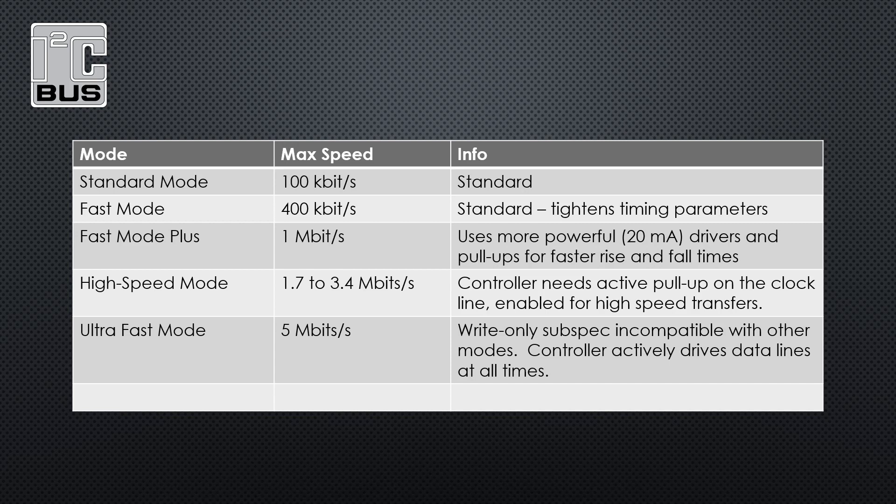What sort of signaling speeds are we looking at? Well, the original spec from 1982 had a transfer rate of 100 kilobits per second, and in 1992 the spec was tightened for a new mode called fast mode that allows 400 kilobits per second signaling. This was actually the first formal standardizing of the spec. Standard and fast mode are by far the most common rates used and they are more than adequate for most sensors.